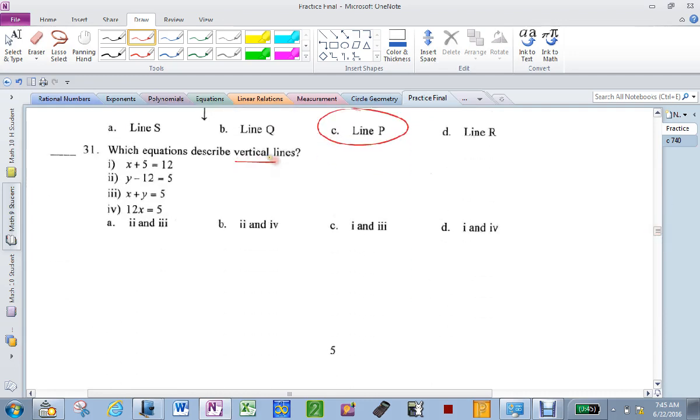Vertical lines. Vertical lines means only an x value. So that's only an x. That's got a y. That's got an x and a y. And that's got an x. So it's 1 and 4.